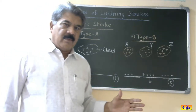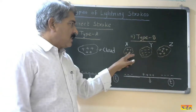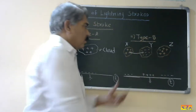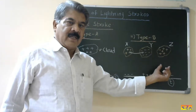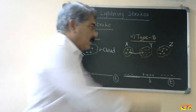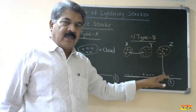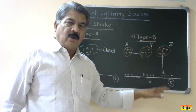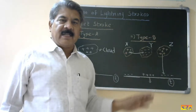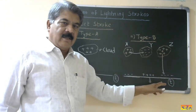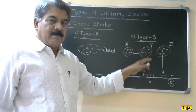At some point, suppose cloud Y discharges with cloud X — the charges are neutralized. Suddenly the potential of cloud Z is released, and when this potential is suddenly released, it discharges on the ground. This type of discharge is very quick and is irrespective of the topmost object below the cloud, because there is a sudden release of charge — dq/dt is very high. So it is sudden and irrespective of the topmost object below the cloud. That is the Type B stroke.